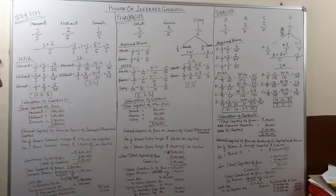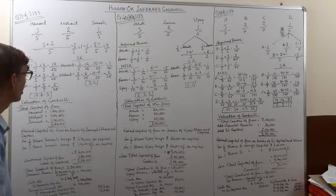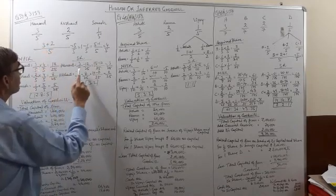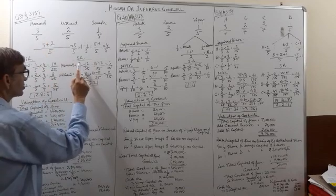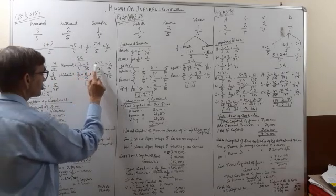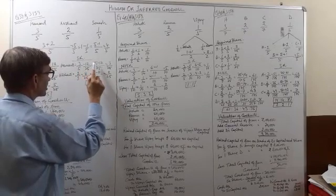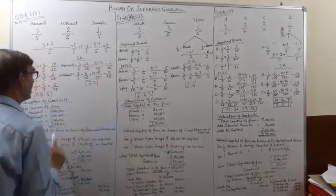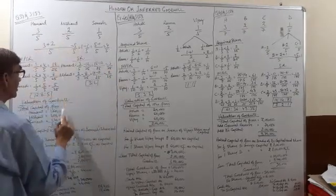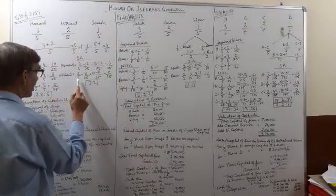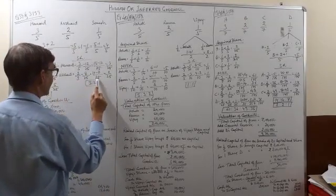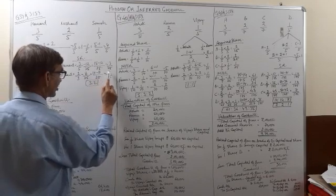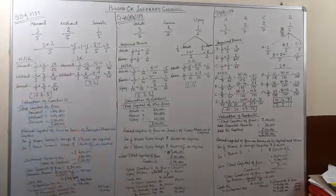Now we calculate the sacrificing ratio, which is old minus new. Hemant's old ratio was 3/5 and new ratio is 12/25. So 3/5 − 12/25 = 15/25 − 12/25 = 3/25. For Nishant: 10/25 − 8/25 = 2/25. So the sacrificing ratio is 3:2.